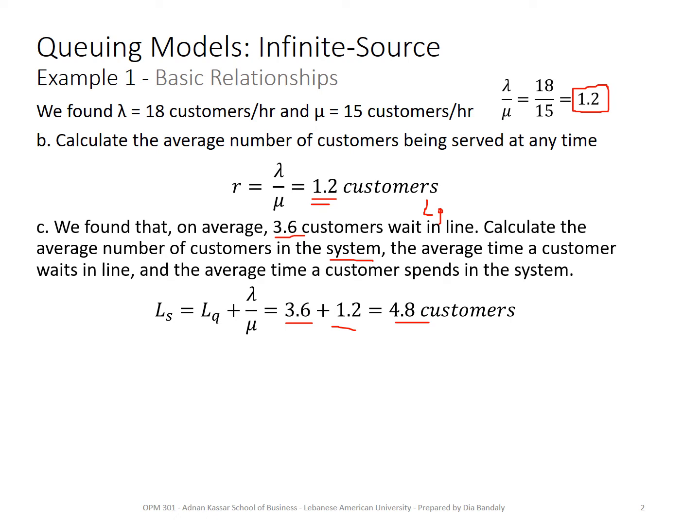Then the second is average time customer waits in line. So that's Wq, which is Lq over lambda. So we get 3.6 over 18. We get an answer of 0.2. How can I tell what's the time unit in my result? It's easy, because this time unit comes from lambda, and lambda is 18 customers per hour, so that should be in hours.